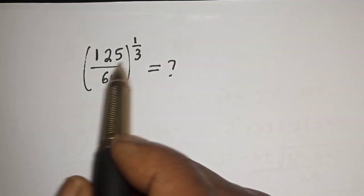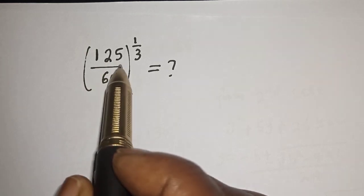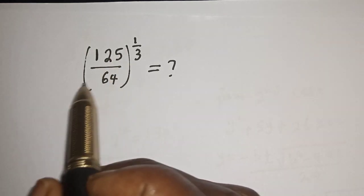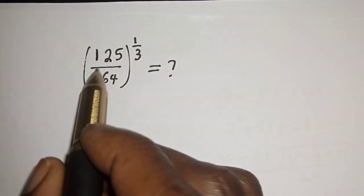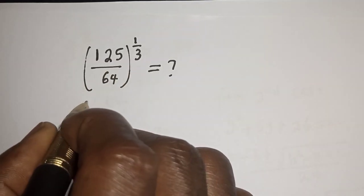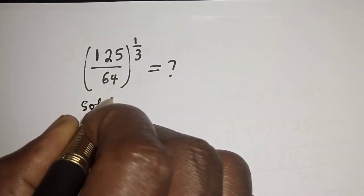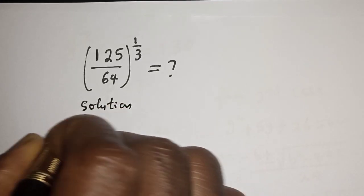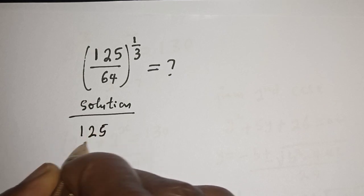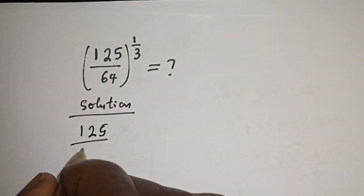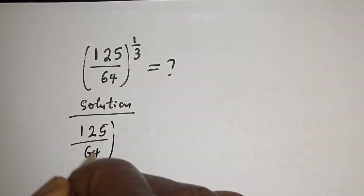Hi everyone, welcome to my class. In this class we want to simplify this nice math problem without using a calculator. But before we proceed, please don't forget to like, share, comment and subscribe. Solution: we have 125 over 64 raised to the power of 1 over 3.